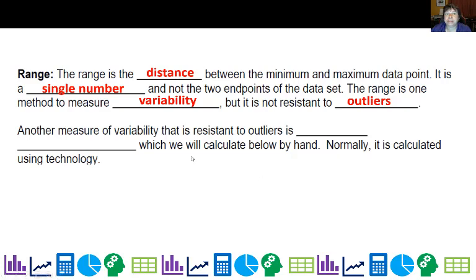Another measure of variability that is more resistant to outliers is standard deviation. We're going to calculate that by hand, but normally you're going to use a calculator or an applet or a spreadsheet to do this. I want you to see where it comes from.